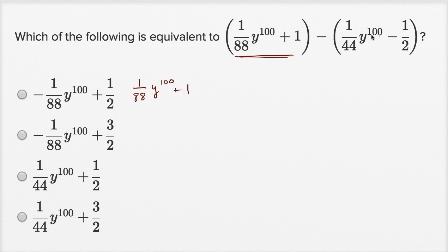And then we're going to subtract all of this. So one way to think about it is we could distribute this negative sign. So it's going to be negative 1 times all of this business, so it's going to be minus 1 over 44 y to the 100th.